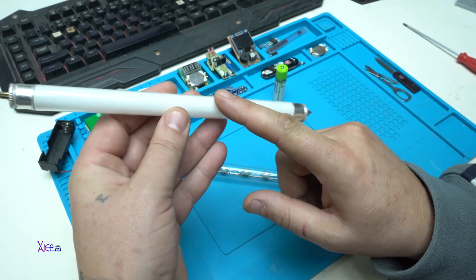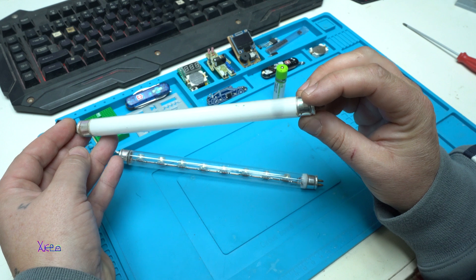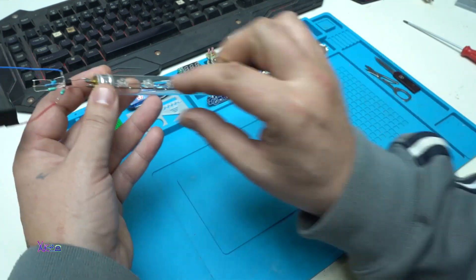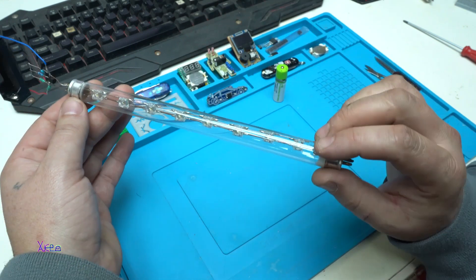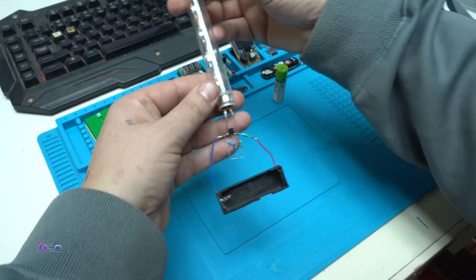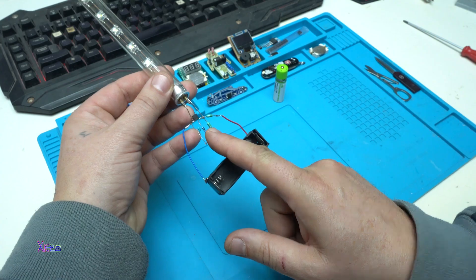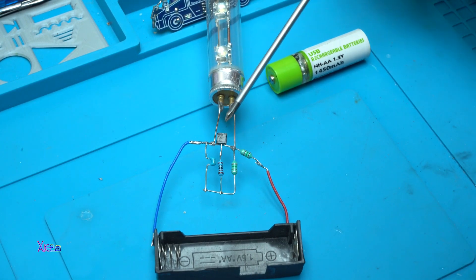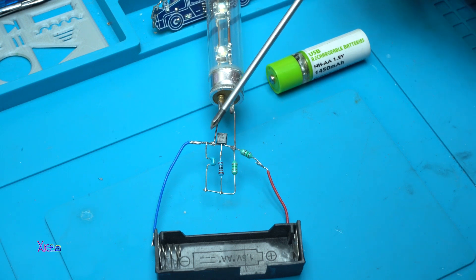This is an old CFL bulb and I have converted it into LED with transparent glass and I have added a small Joule thief. Okay, let me explain the Joule thief. The main part is this NPN transistor 2N3904.